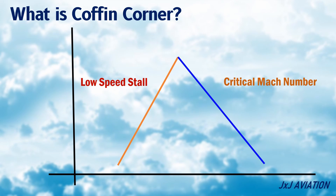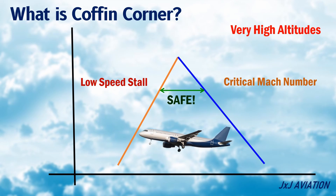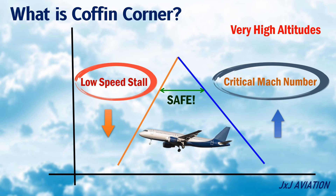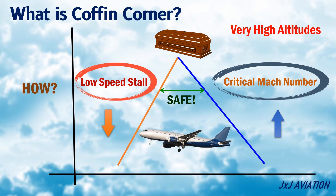This happens at very high altitudes. The aircraft is safe only in this speed range. If the speed reduces, it will result in a low speed stall. If the speed increases, it will result in supersonic flow and shockwave formation. Let's look at how this coffin corner is formed and why it is dangerous for an aircraft.